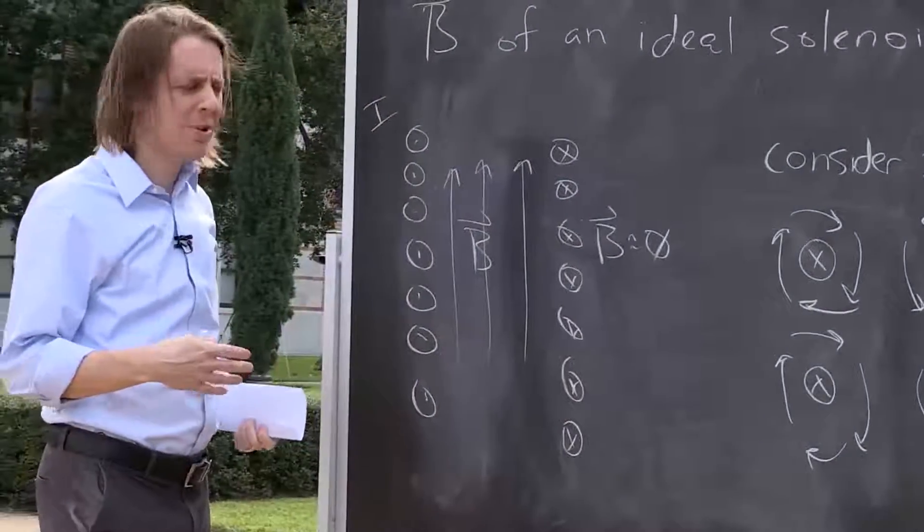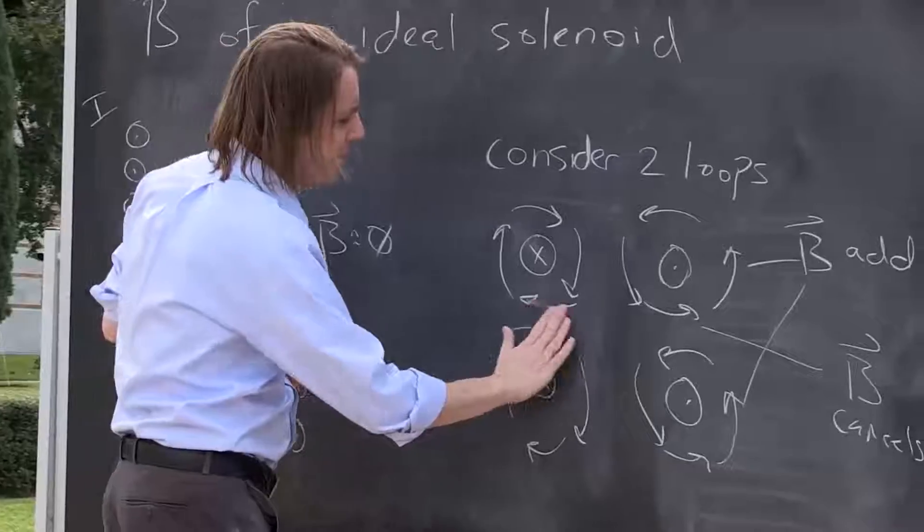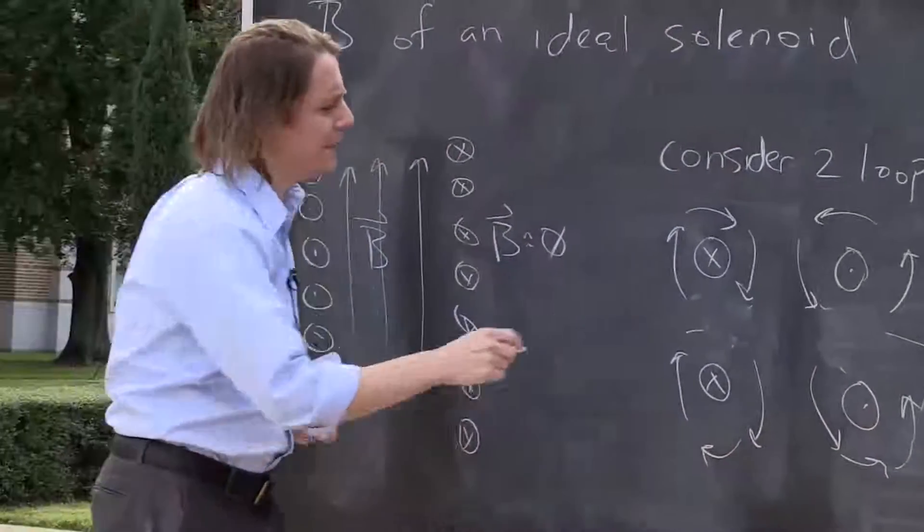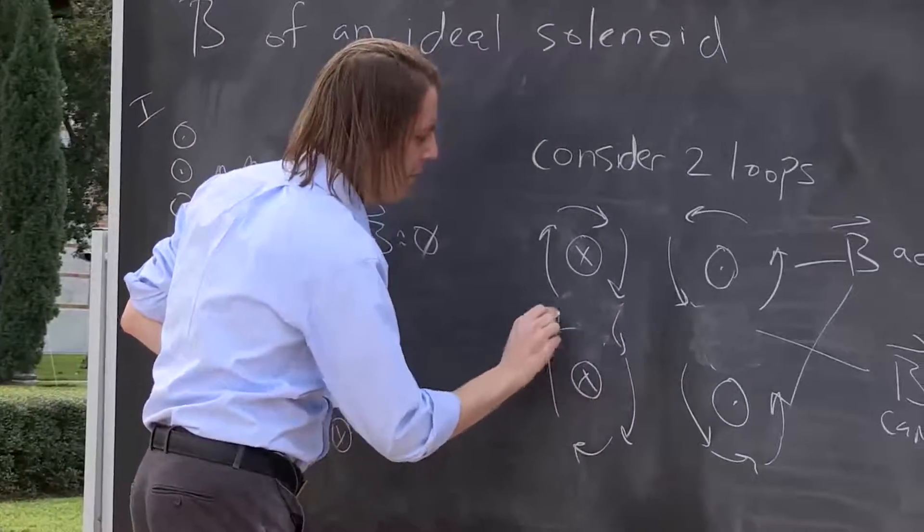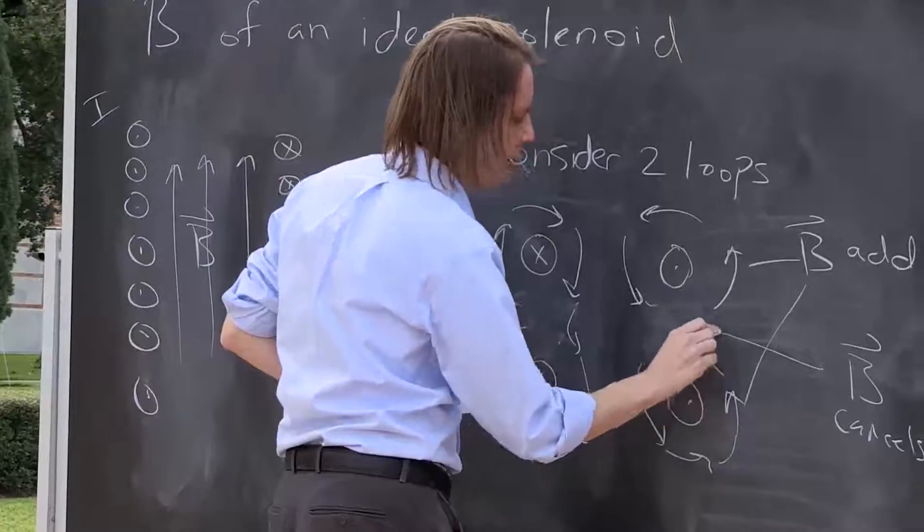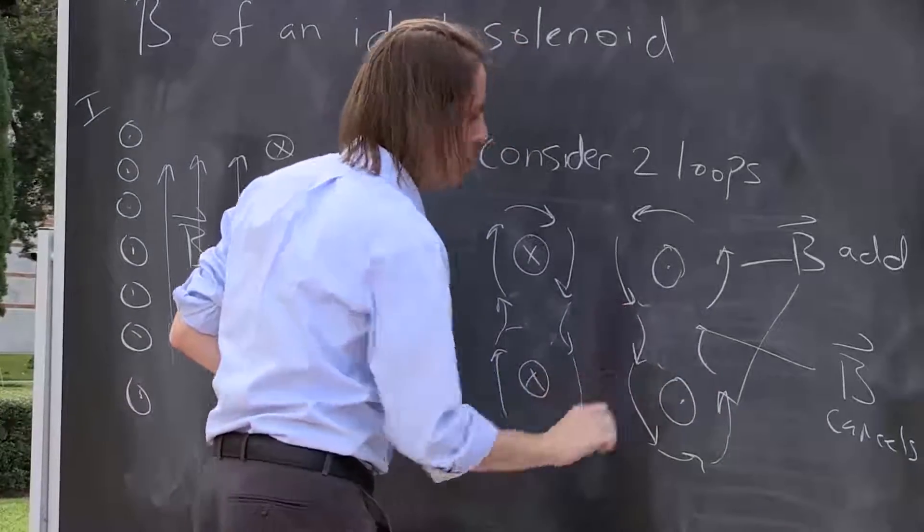So the toroidal shape of the wire basically eliminates the B field here in between the wires. Those actually do cancel, and you get a field that kind of does this. It kind of goes around, in this case, kind of like an eight-shaped pattern.